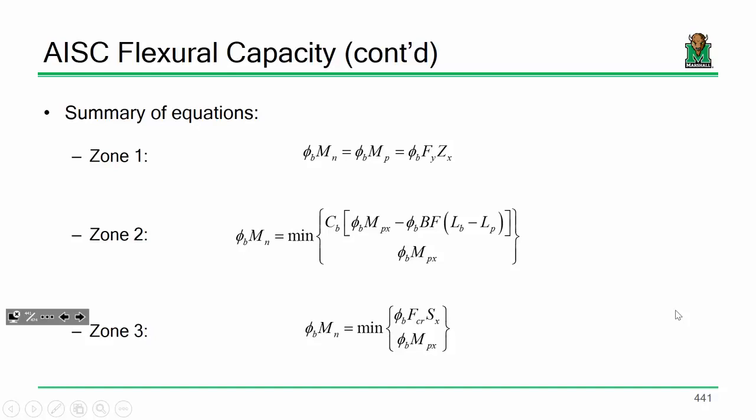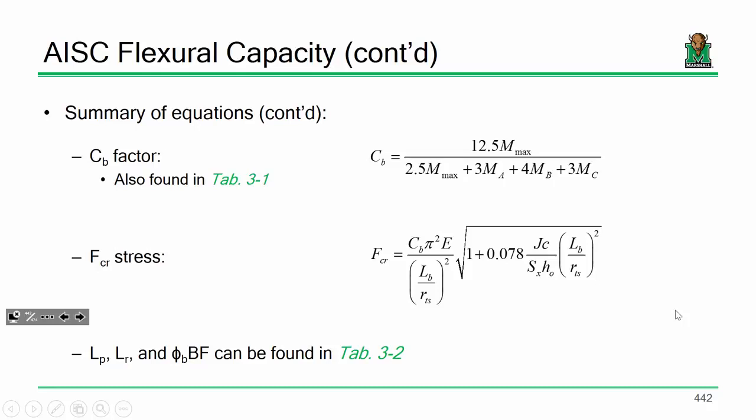For zone 2, your capacity is either the minimum of phi M_P or that linear fit. And you can see the phi values have been incorporated, as well as the beam factor. Zone 3, it's either the minimum of phi M_P or phi F_critical S_X. And notice the phi values have been incorporated. We're going to have to manually multiply that one out.